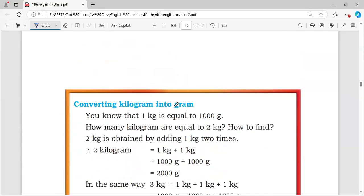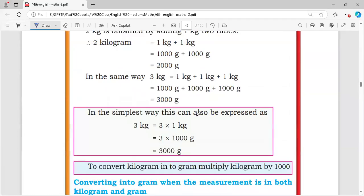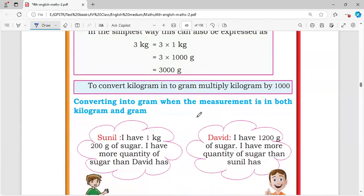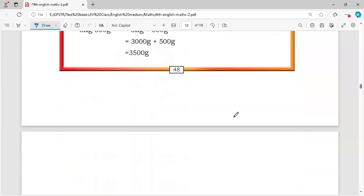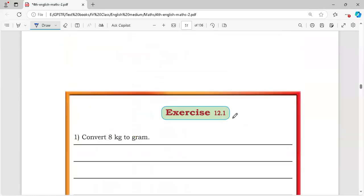Converting kilogram into gram: to convert kilogram into gram, multiply kilogram by 1000.